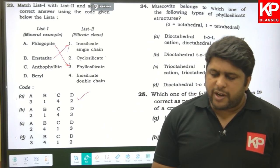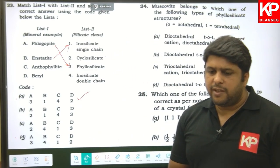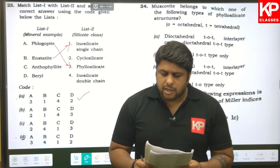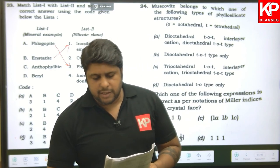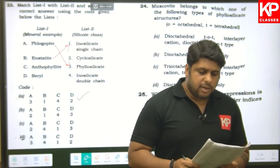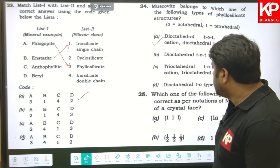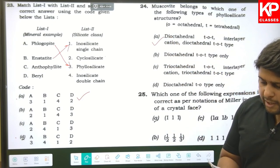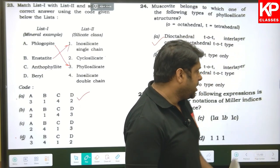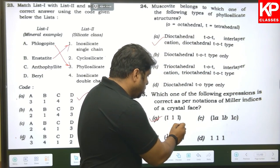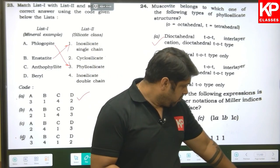Question twenty-four: muscovite belongs to which type of phyllosilicates? It is a di-octahedral TOT with interlayer cation — di-octahedral TOT type. So option A is the answer. Question twenty-five: which mean expression is correct as per Miller indices notation? A is the right answer based on the correct notation used.